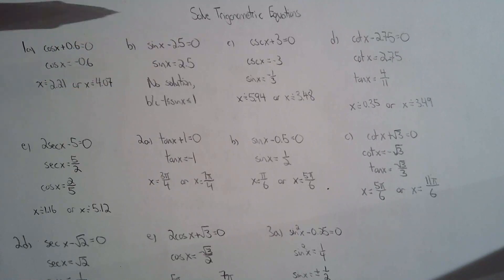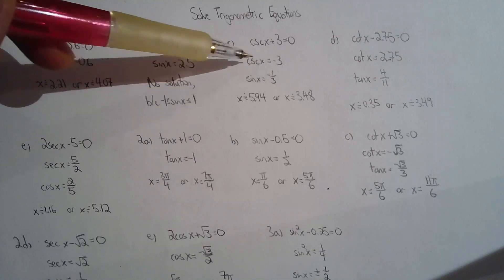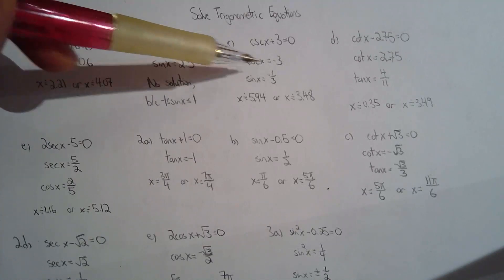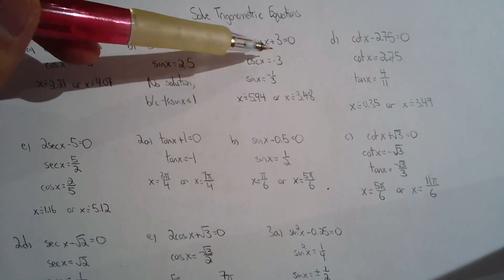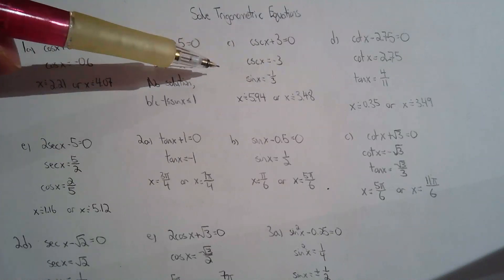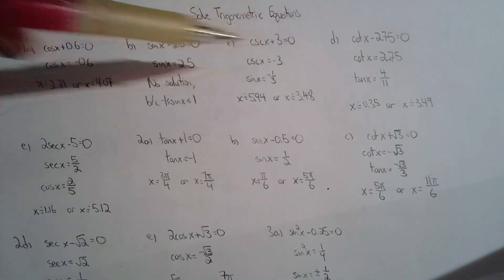Especially this one, like cosecant x equals negative 3, you have to switch it to a primary trig function because this is not going to give you an exact answer. There's no inverse cosecant button on your calculator, so you have to change it to sine x.